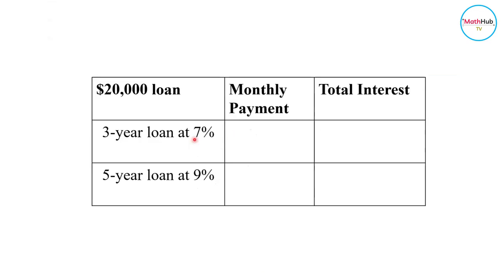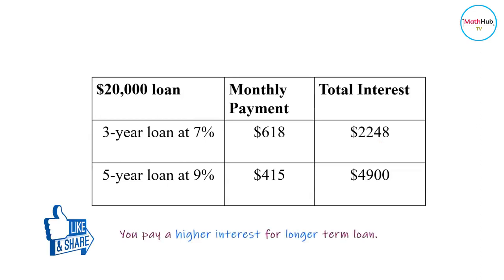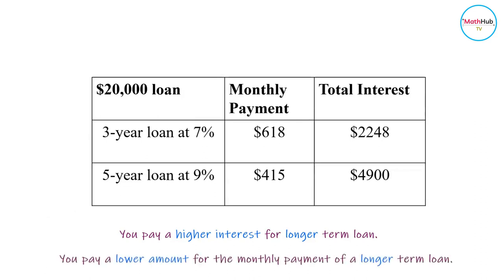Comparing the two loans: for the three-year loan at 7%, the monthly payment is $618, while for the five-year loan at 9%, the monthly payment is just $415 — because it is spread over five years. But if you compute the total interest paid, loan B is $4,900, whereas the three-year loan is just $2,248. Interest is more with a longer-term loan because it keeps on earning interest, but the monthly payment for a longer-term loan is lower than a short-term loan.